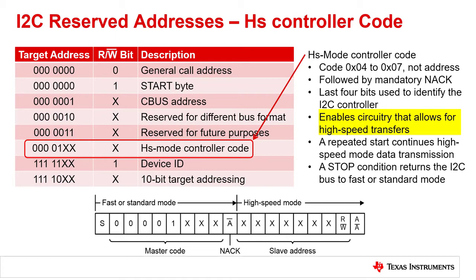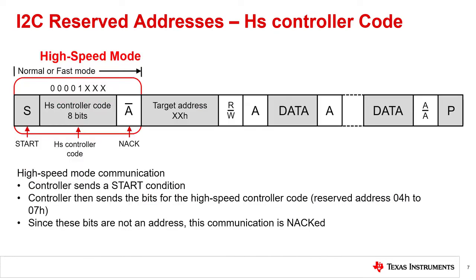When enabled, high-speed data transfer continues through the data transmission. A repeated start continues high-speed mode data transmission while a stop condition returns the I2C bus to fast or standard mode. This diagram shows the beginning of a high-speed mode transmission. Here, we'll show how a controller writes the high-speed controller code to the device.